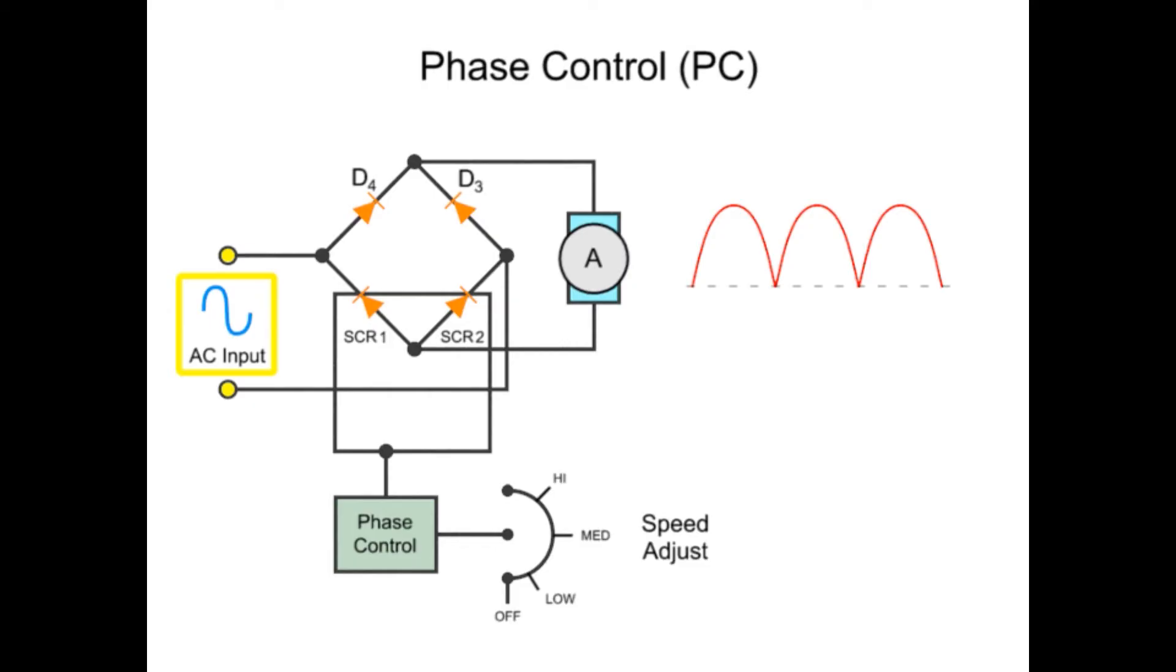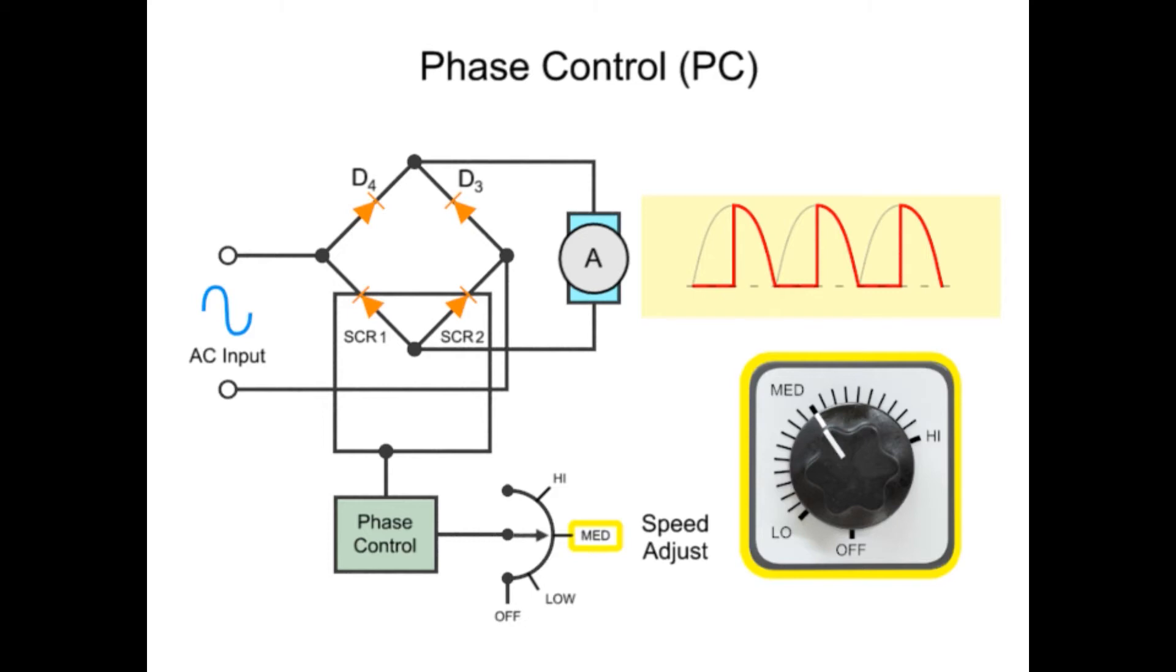This diagram depicts an AC sinusoidal wave being altered by a full-wave rectifier to produce partial half-waves. The partial half-wave output produced is reduced based on when the firing device is activated.